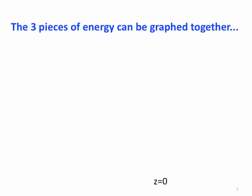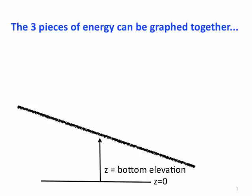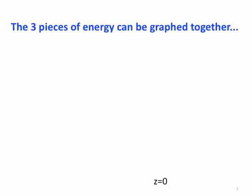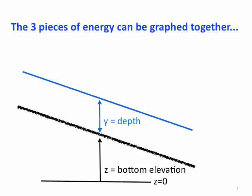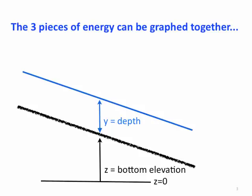The three pieces of energy can be graphed together. We start with the bottom elevation, measured from some baseline z equals zero. We add to that the depth, and then the v squared over 2g, our velocity head. So the blue line represents the actual water surface elevation, and the dashed red line represents the velocity head added onto the depth, so the total of the black arrow, the blue arrow, and the red arrow is all the energy in the fluid.